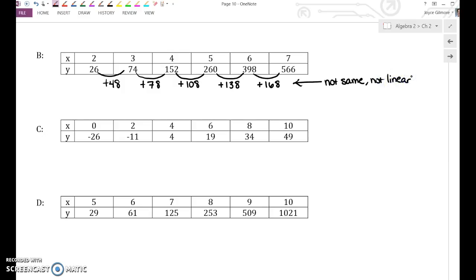Let's check the second level of differences. 48 to 78, how do you get from 48 to 78? Add 30. How do you get from 78 to 108? Add 30. Add 30. Add 30. The second level of differences are the same. So that means it is a quadratic function.